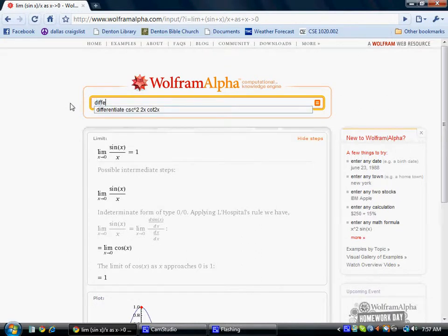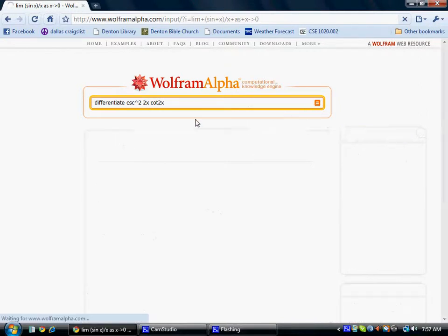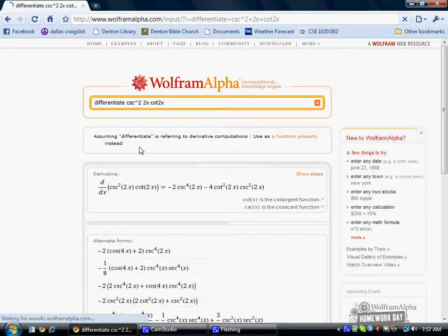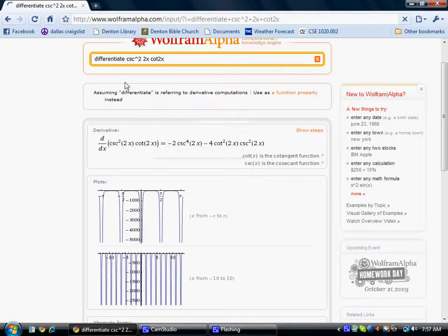Also, for differentiation, here's the function I was working with earlier: cosecant squared of 2x cotangent 2x. And you'll see that WolframAlpha will change the form that you wrote it to the Mathematica form, which is the natural way that we would write it in math.